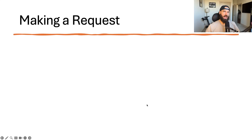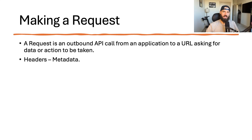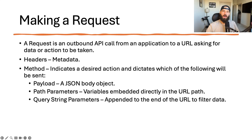A request is an outbound call made from a client to an endpoint requesting data or to perform some function — it's the first step in the client-server communication process. A request includes headers, which contain various metadata such as the type of content being sent, authorization keys or tokens, or the encoding used. A request is always sent with a method indicating the desired action. The method will dictate what additional data is sent: the payload is a JSON object with additional data, path parameters are variables in the URL path, and query string parameters are appended to the end of the URL to filter data.